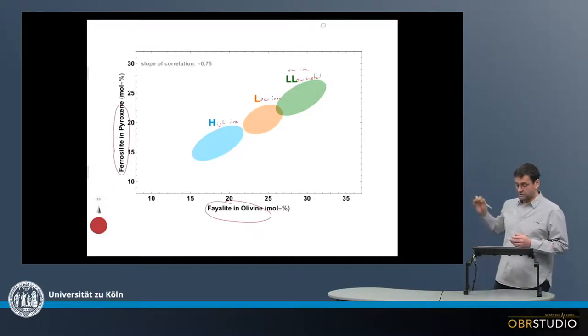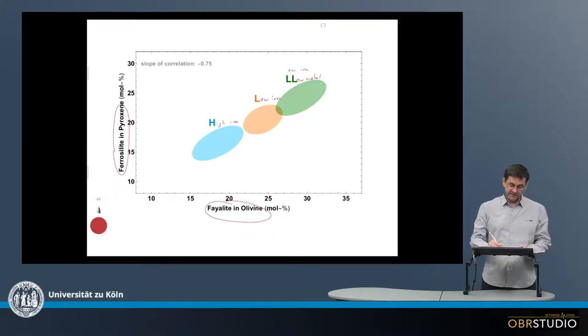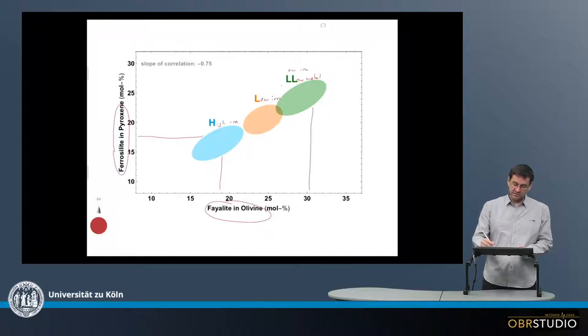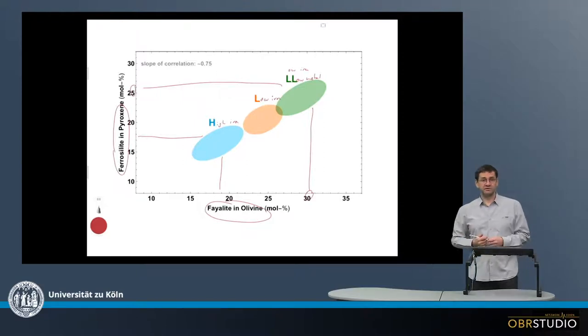Then, look at the three groups. We find that the high iron chondrites have the olivine and pyroxene with the lowest iron content, and the LL chondrites with low metal, low iron, have the highest fayalite and ferrosilite content in olivine and pyroxene respectively.